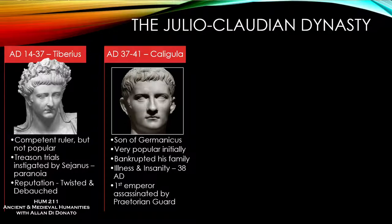Caligula becomes emperor from 37 to 41 AD. The name Caligula is a nickname — it literally means 'little boots,' a nickname the troops gave him when he used to wear a little Roman soldier's outfit at his father's military camps. His father was so popular that when he becomes emperor, Caligula kind of inherits this popularity not because of anything he did, but because of the person of his father.